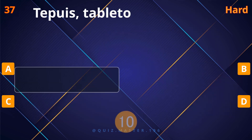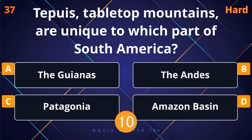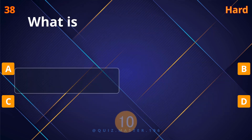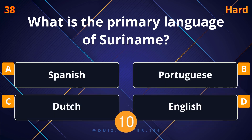Which river flowing through Colombia, Ecuador, and Peru is a major Amazon tributary? Putumayo. Tepuis — tabletop mountains — are unique to which part of South America?